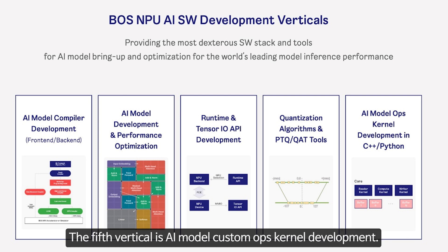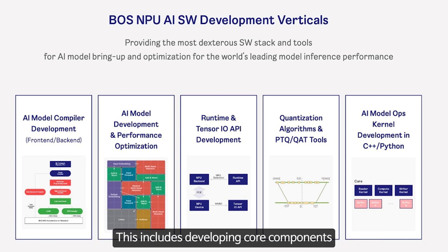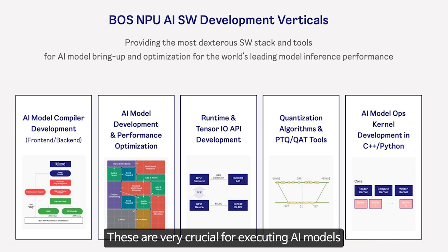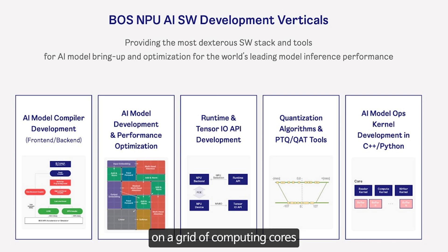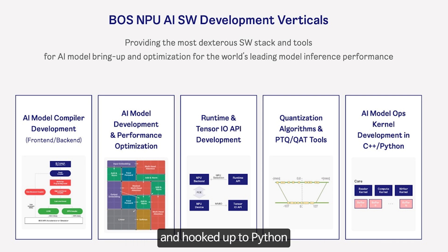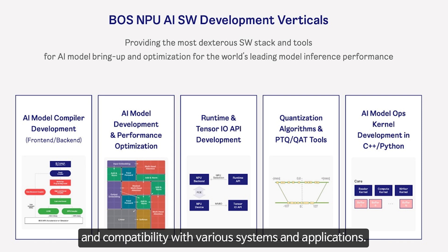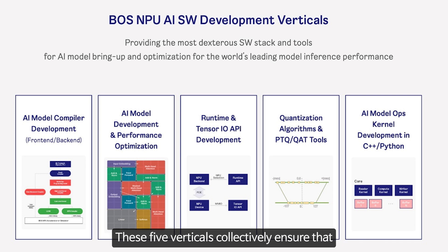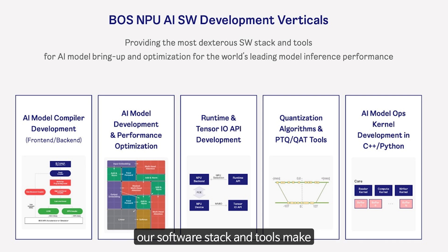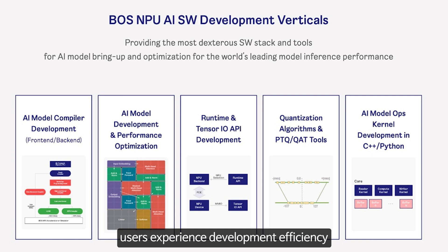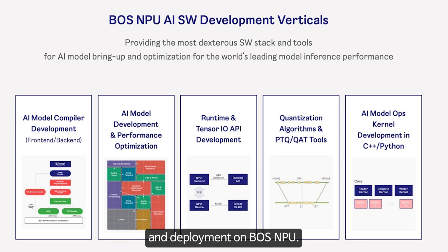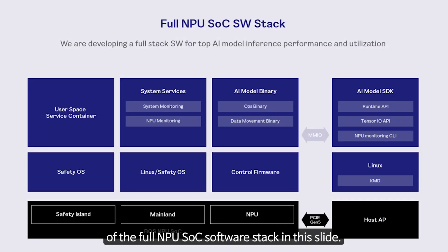The fifth vertical is AI model custom ops kernel development. This includes developing core components like data movement and compute kernels, which are crucial for executing AI models on a grid of computing cores with extreme performance. These kernels are implemented in C++ and hooked up to Python using PyBind to ensure adaptability, flexibility, and compatibility with various systems and applications. These five verticals collectively ensure that our software stack and tools deliver development efficiency and high performance of AI model development and deployment on our MPU.